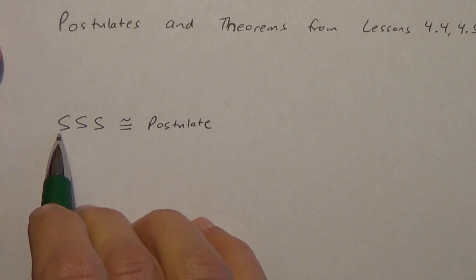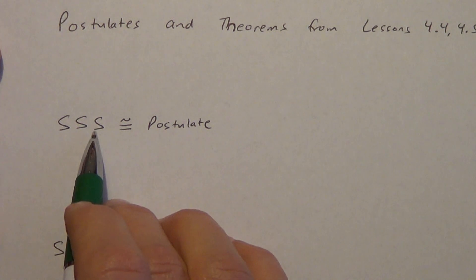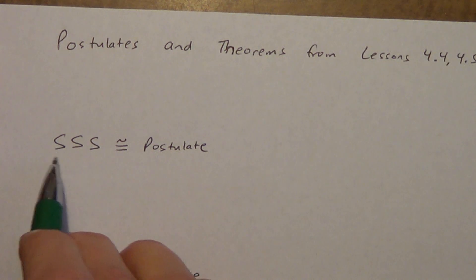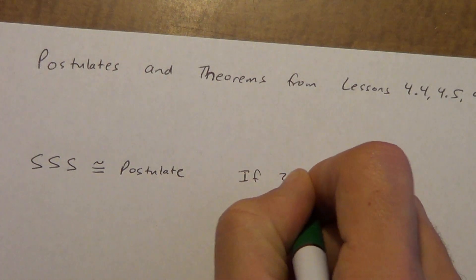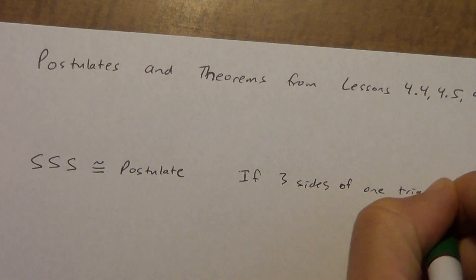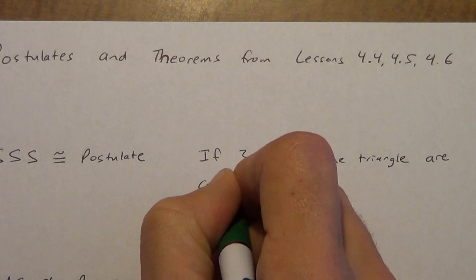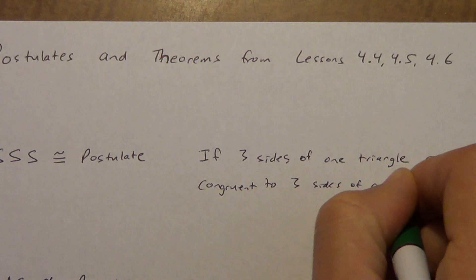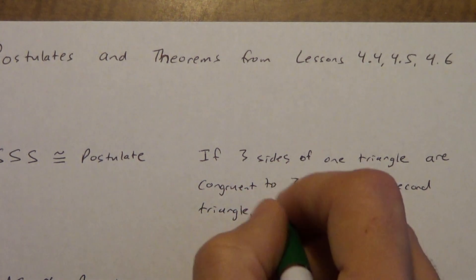Let's start with the side-side-side congruence postulate. Each S stands for a side — we're talking about triangles. We write it as SSS. If three sides of one triangle are congruent to three sides of a second triangle, then the triangles are congruent.